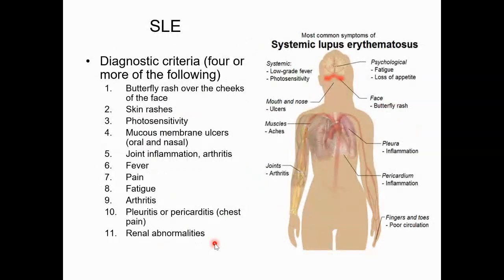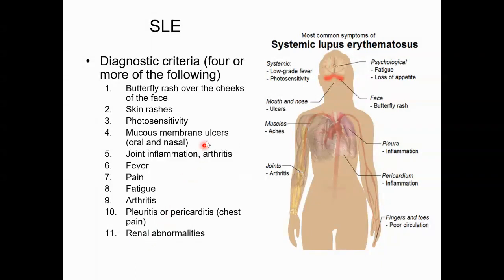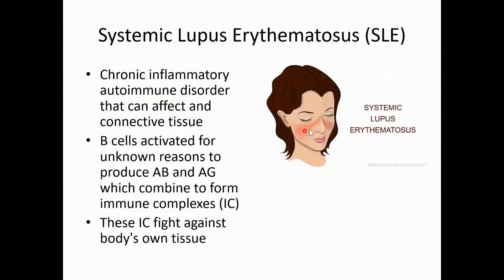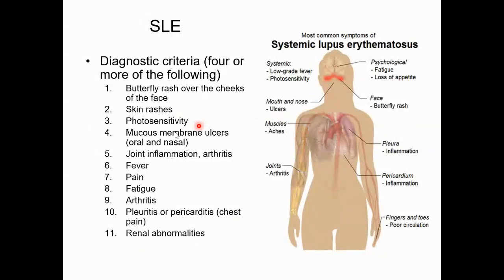Diagnosing lupus requires four or more of the following criteria, and it's just kind of hard to diagnose autoimmune disorders since there are multiple types of symptoms that some people have and some people don't. One that is very specific — not everybody gets it, but it's a classic test question — is the butterfly rash over the cheeks of the face, which is a classic sign of lupus.